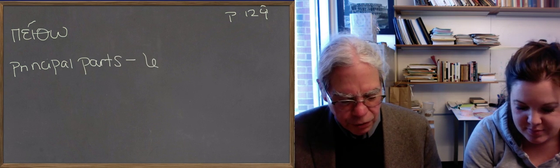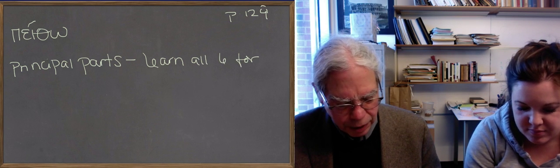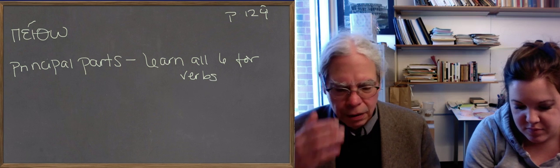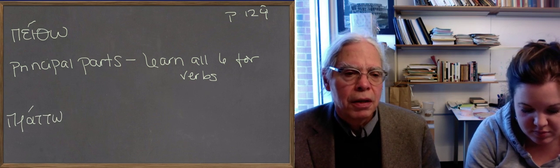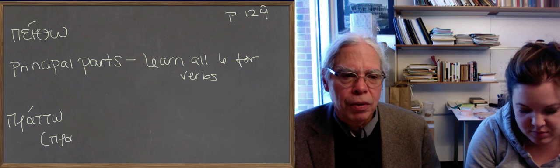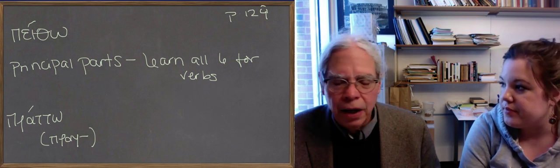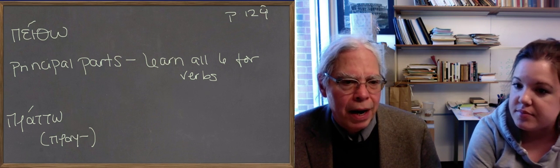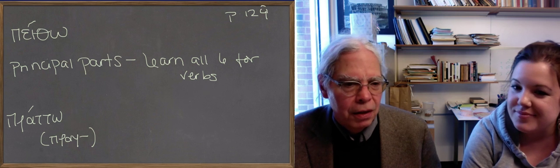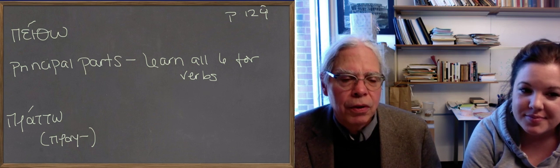And the last one is the verb πράττω, which has a long alpha. The underlying root here is πραγ, P-R-A-G. And this is what we have, or it's like pragmatic and practical. The gamma becomes a kappa before a T. So that's why it's prac with a K or a C in English in those other places.